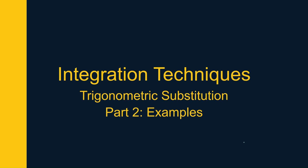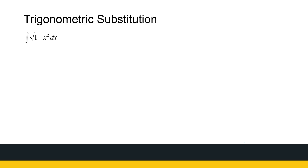Let us look at some examples of using trigonometric substitution to solve integrals. The first example is the integral of the square root of 1 minus x squared. The substitution we're going to use is x equals sine theta, since our value of a is 1.